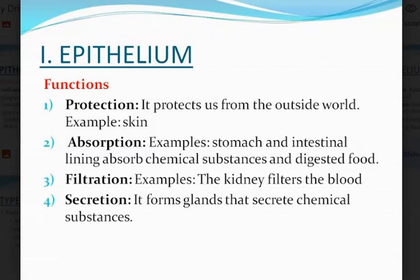For protection, it protects us from the outside world. For example, the skin is made up of epithelial tissues on the surface. For absorption, examples where we have absorption occurring in the epithelial tissue is the stomach and in the intestine — the lining of the stomach and intestine where absorption of digested food and other chemical substances occurs.